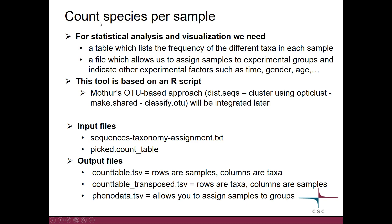The Chipster tool 'count species per sample' is based on an R script, but we are also planning to integrate Matur's OTU-based approach, which consists of these Matur tools, later. As input you need to give the sequences taxonomy assignment file from the previous step, and the count table.